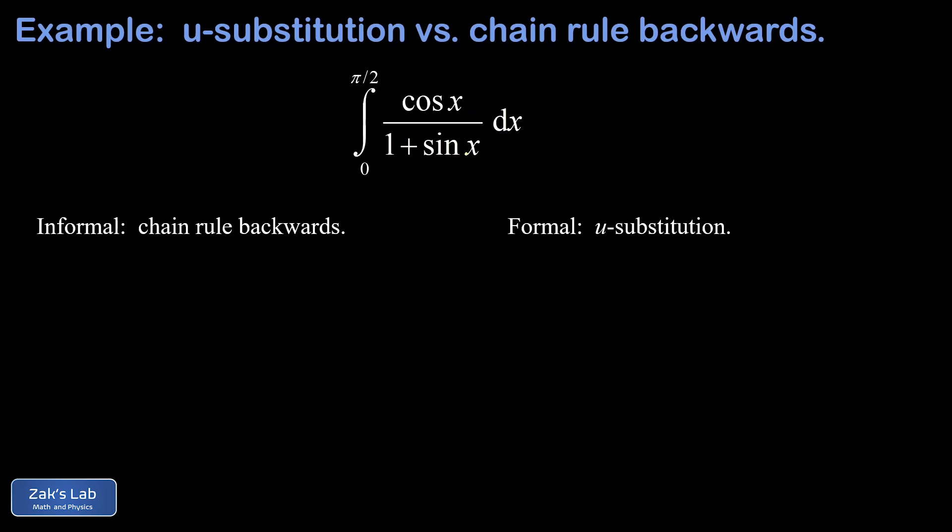To see the chain rule backwards here, what I notice is that I have the derivative of the denominator sitting right there in the numerator. And so I think to myself, what can I differentiate to get 1 over something and then multiplied by its derivative? This is simply the chain rule operating on a natural log function.